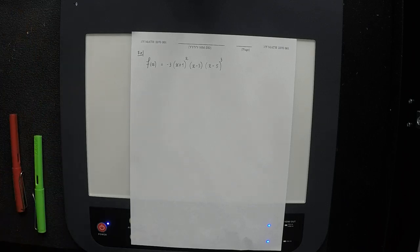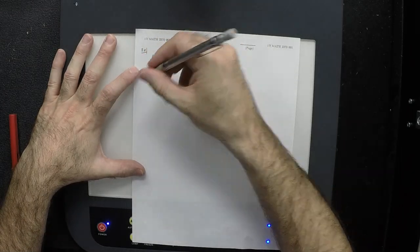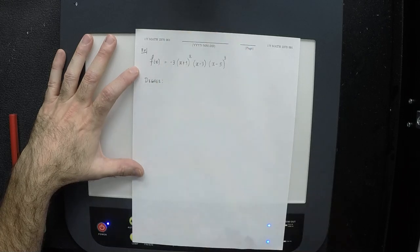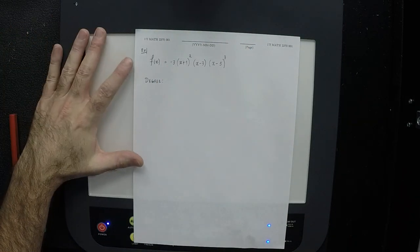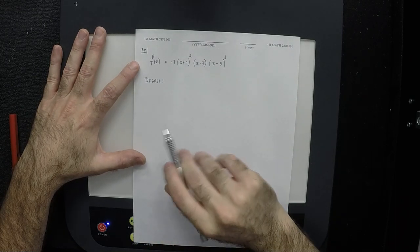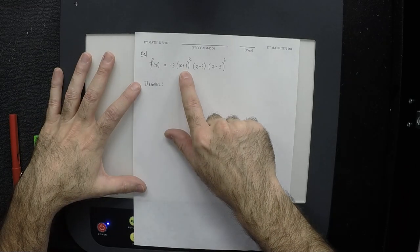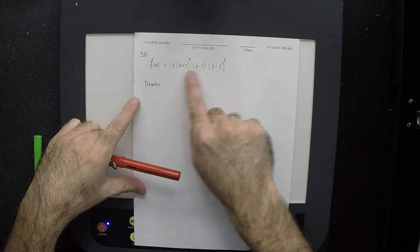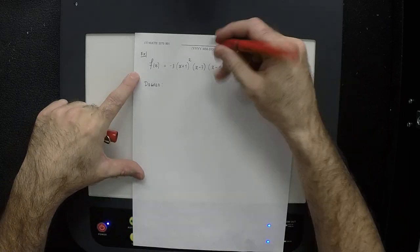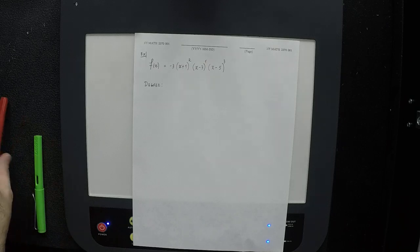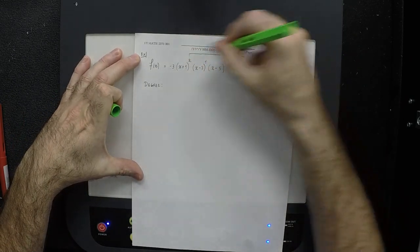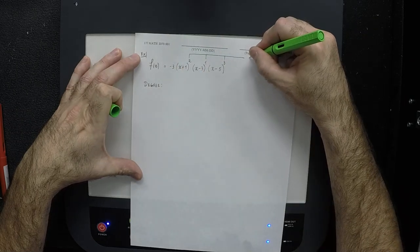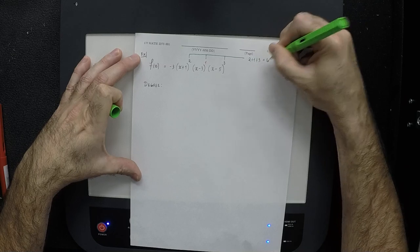First, what's the degree of this polynomial? It's 6. The x squared in the first binomial, single x in the next, and x cubed in the third — multiply those to get x to the sixth. Equivalently, since all factors are degree one raised to exponents, add the exponents: 2 plus 1 plus 3 equals 6. Furthermore, the leading coefficient is negative 3.